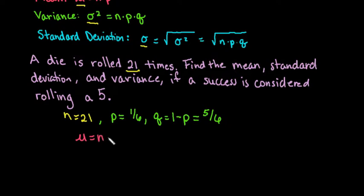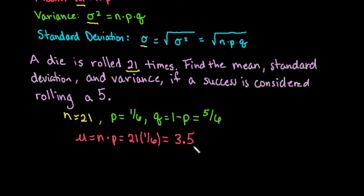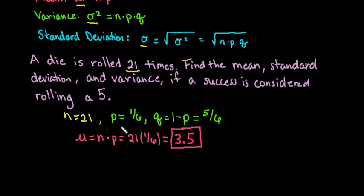The mean is always n times p, so we take 21 times 1 sixth. When you plug that in, you get 3.5. So on average, out of 21 rolls, we would expect to see 3.5 fives. We know we can't actually get this — the mean does not have to be a possible value. If we did this infinitely many times, the average would be 3.5 fives out of 21.